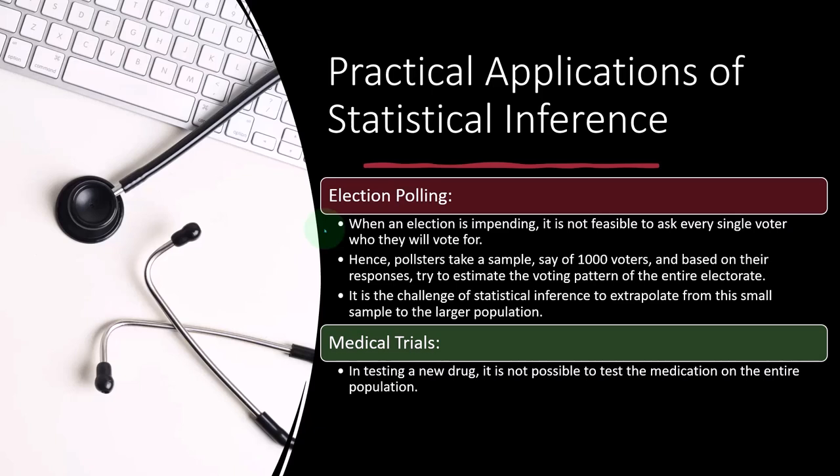In medicine, for example, when testing a new drug, it is not possible to test the medication on the entire population. So if we're trying to say, is this drug effective — will it do what we think it's going to do? — we can't take the entire population. Instead, we take a smaller group, even from the population that is sick, and test on that smaller group.